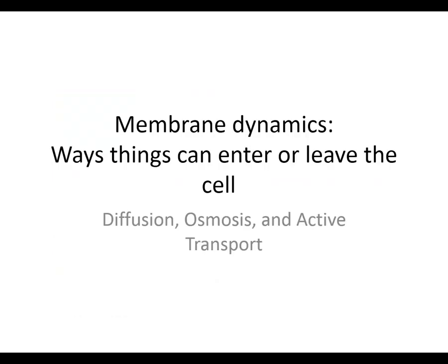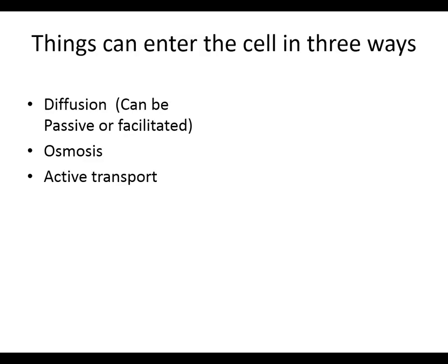Let's look at the ways things can enter or leave the cell. We've got diffusion, osmosis, and active transport. How many people have heard this kind of stuff before? A lot of you. Three basic ways: diffusion, osmosis, active transport. Within diffusion, we have passive diffusion and facilitated diffusion.